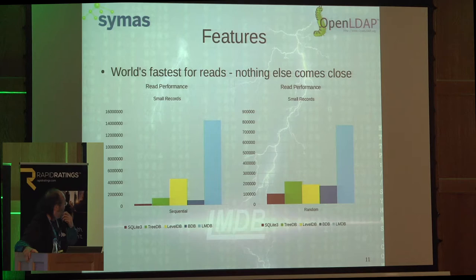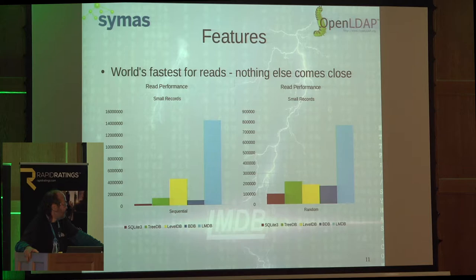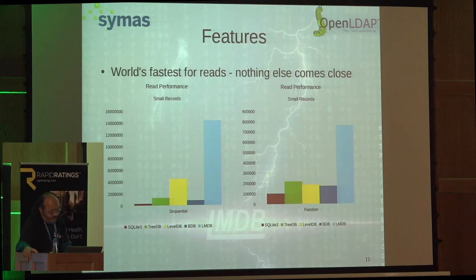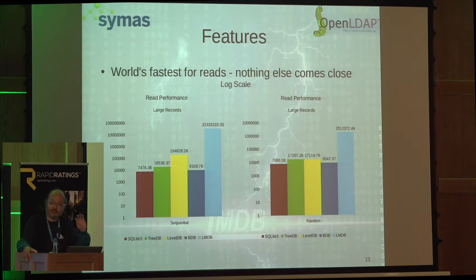This chart shows read performance for small records — 16-byte keys and 100-byte values in a database with 100 million records — compared against Berkeley DB, Google's LevelDB, Kyoto Cabinet's TreeDB, and SQLite 3. The difference in read speeds is pretty drastic. With 100,000-byte values, the other databases don't even register. On a logarithmic scale you can see they're doing some work, but the difference is multiple orders of magnitude.